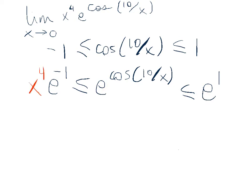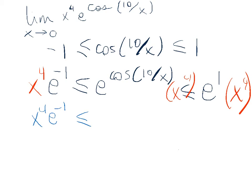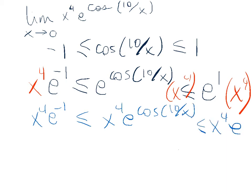So I can multiply each piece of this inequality by x to the 4th. My inequality becomes: x to the 4th times e to the negative 1 is less than or equal to x to the 4th times e to the cosine of 10 over x, which is less than or equal to x to the 4th times e (since e to the 1 is just e). Here in the center I have exactly the function I want to take the limit of, so now I'm ready to apply the squeeze theorem.